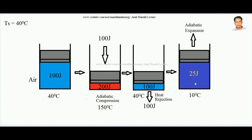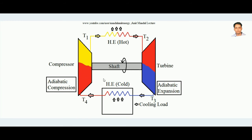A gas cycle refrigeration system consists of four main components: a compressor for adiabatic compression, a hot heat exchanger, a turbine where adiabatic expansion takes place, and a cold heat exchanger connected to the space where the refrigeration effect has to be developed.